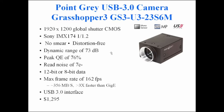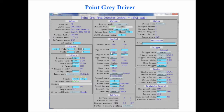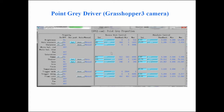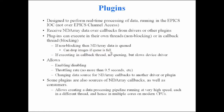ProSilica (now AVT — Allied Vision Technology) makes a camera based on the same chip that's GigE, though you can't get the full performance of this chip over GigE. A 20-meter active USB extender cable allows running the USB3 camera from a computer outside the hutch with only a few percent performance loss. The Point Grey driver screen can work with either GigE or USB cameras, and it hides unavailable properties on the MEDM screen so you don't get overwhelmed with irrelevant information.